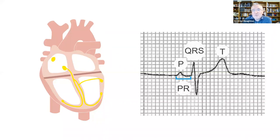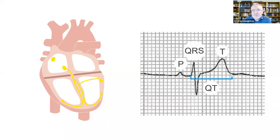We have some intervals on the ECG as well. The PR interval is the gap between the start of atrial depolarization and the start of ventricular depolarization. We have the ST segment between the QRS complex and the T wave, which is particularly useful for looking at myocardial infarction and ischemia. And then we have the QT interval, which measures the total time for the ventricles to depolarize and repolarize — very important as it's closely related to serious arrhythmias.